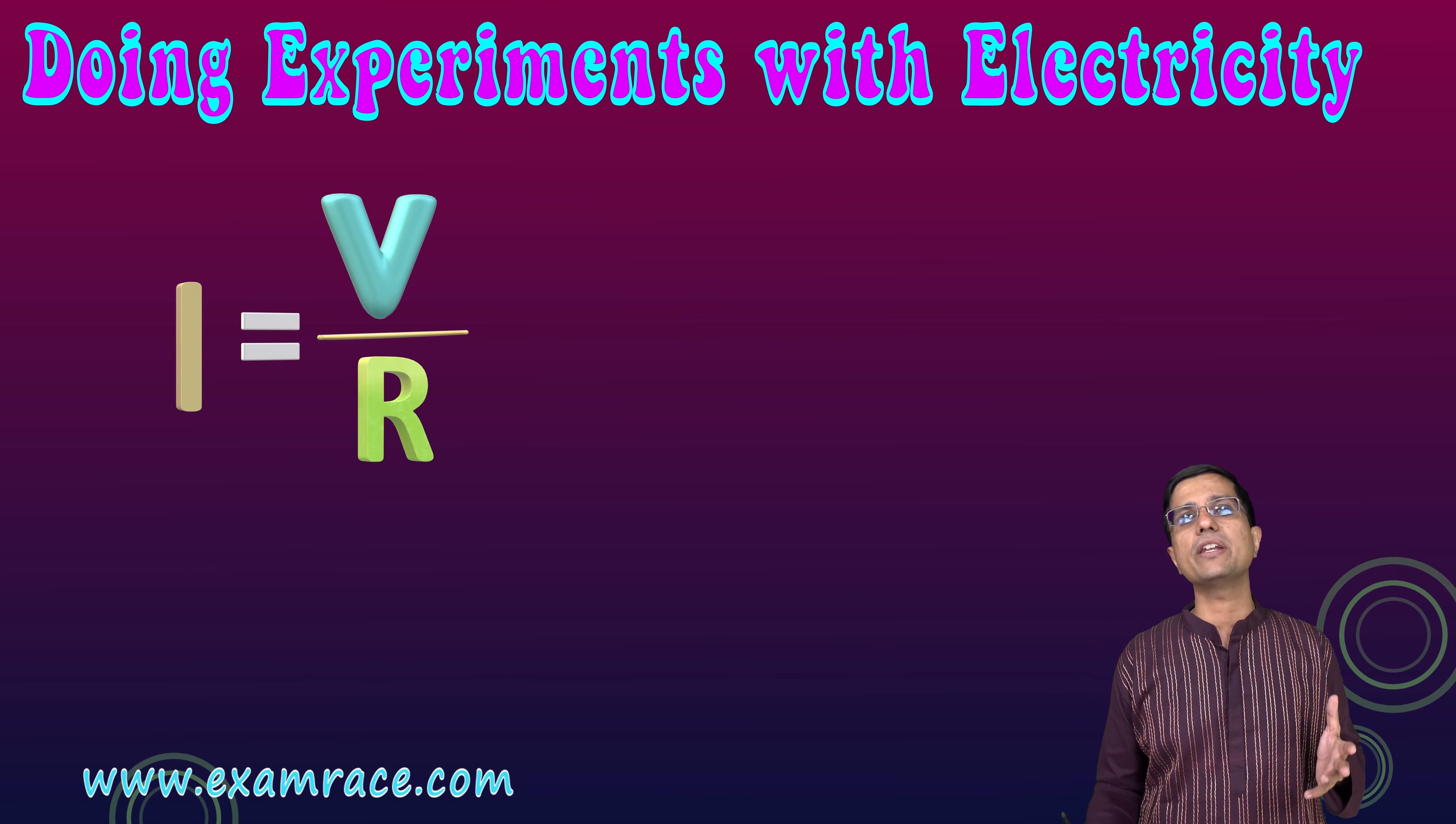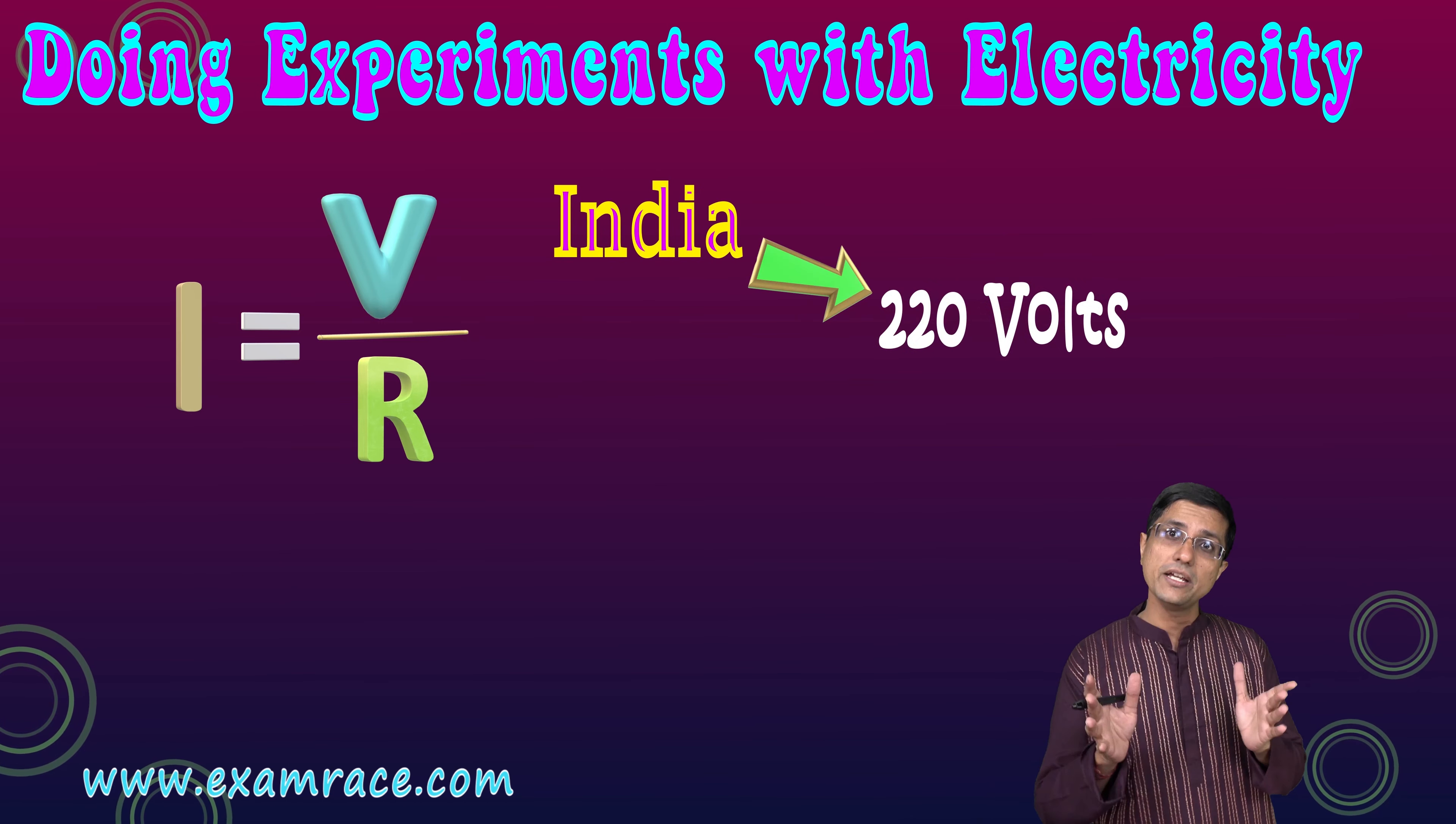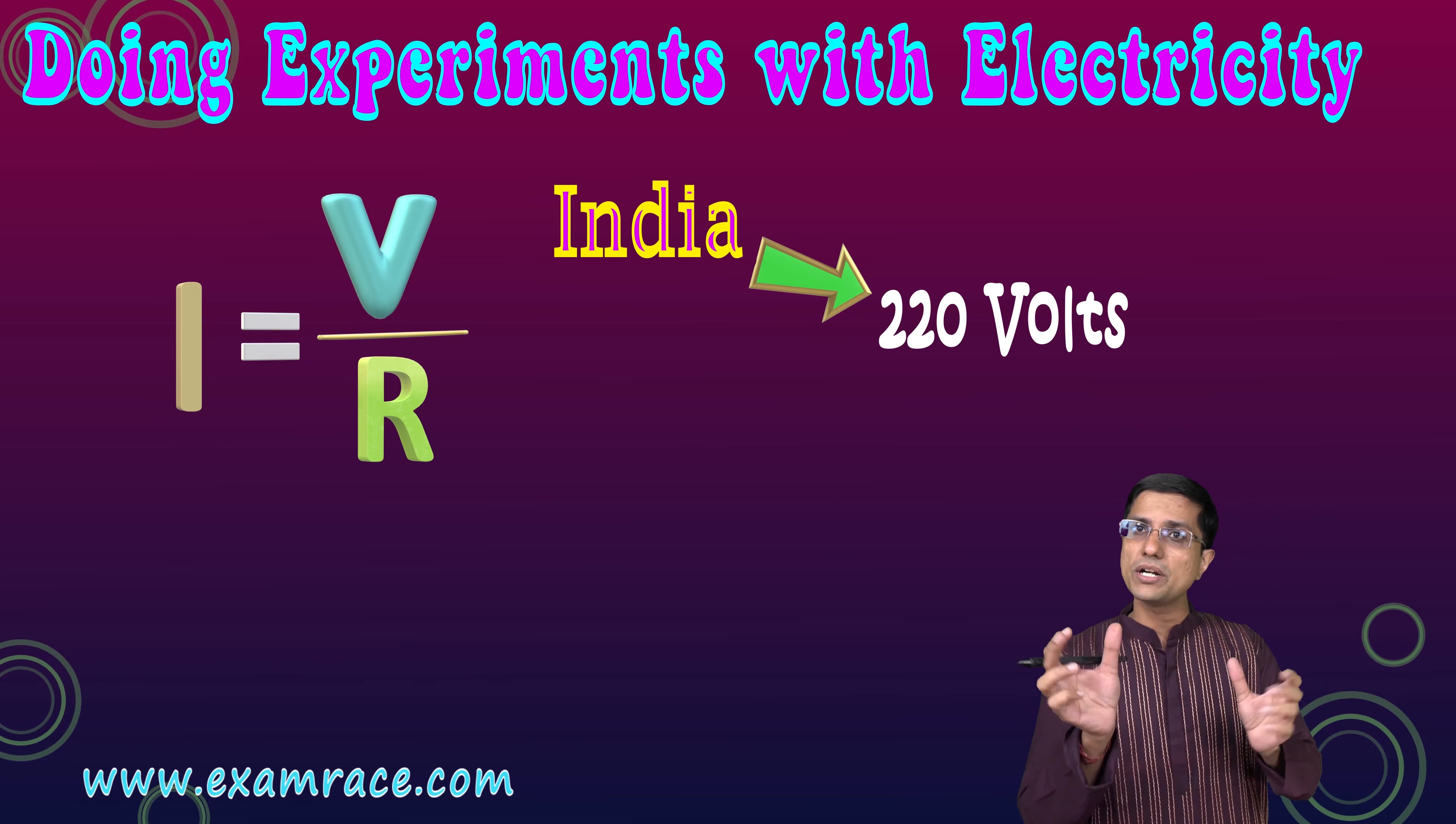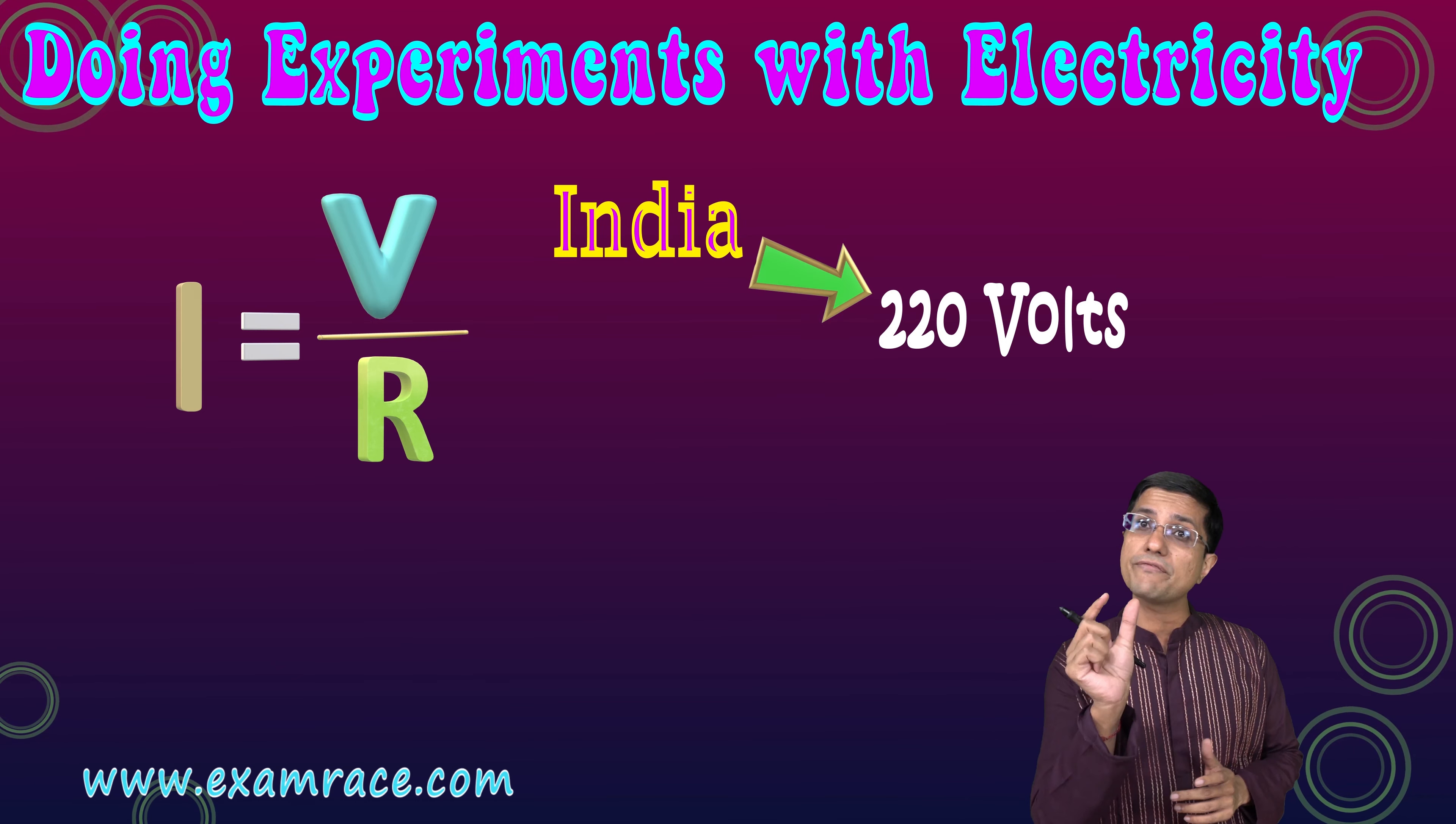The reason being, the mains voltage is actually very high. In India it's 220 volts, which is very high compared to a normal dry cell or battery, which has 1.5 volts.